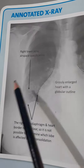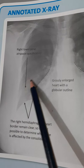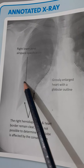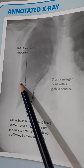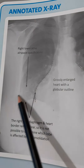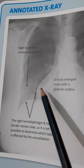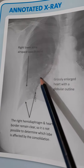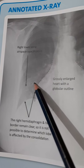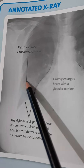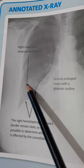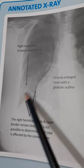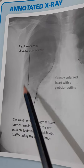There is airspace opacification in the right lower zone, in keeping with consolidation. Both the right hemidiaphragm and right heart borders are clear, so it is not possible to locate this consolidation more accurately to a lobe. The lungs are otherwise clear.